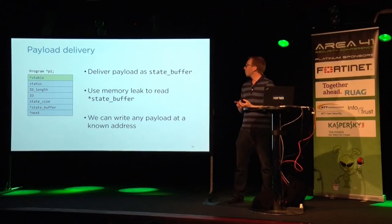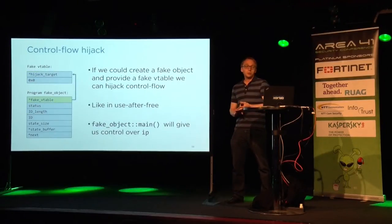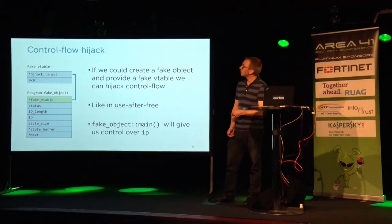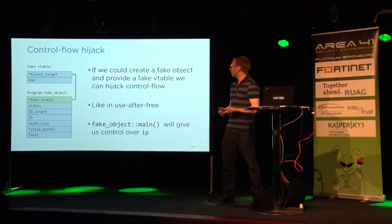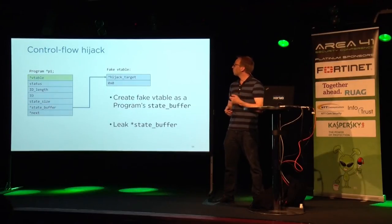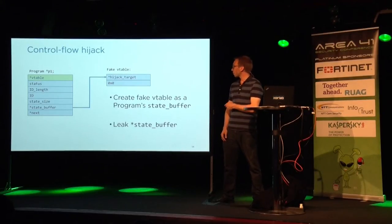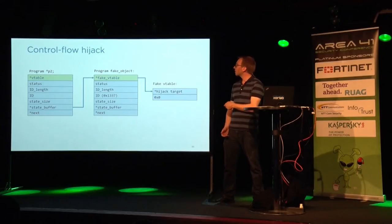Delivering a payload is easy — we just use the state buffer to deliver arbitrary payload, and we can use the memory leak to read the address of the state buffer. For control flow hijacking, we create a fake object with a fake V-table whose first entry points to our escape location. We place the fake V-table in the state buffer, create another buffer with our fake object that knows the address to the V-table we previously leaked.